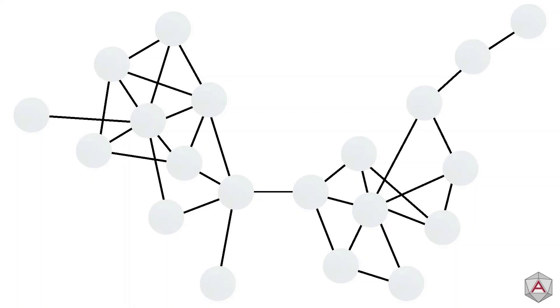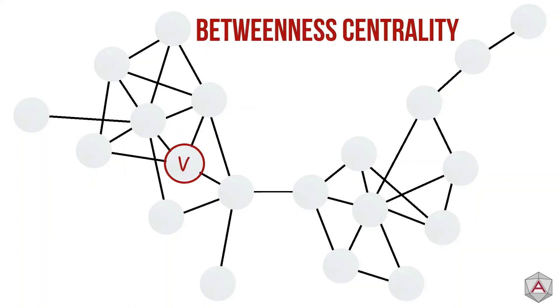Our final centrality measure we will cover is betweenness centrality. Let's calculate the betweenness centrality of this node, V. Our equation for betweenness is the sum of the fraction of shortest paths that will pass through node V. Let's break it down.